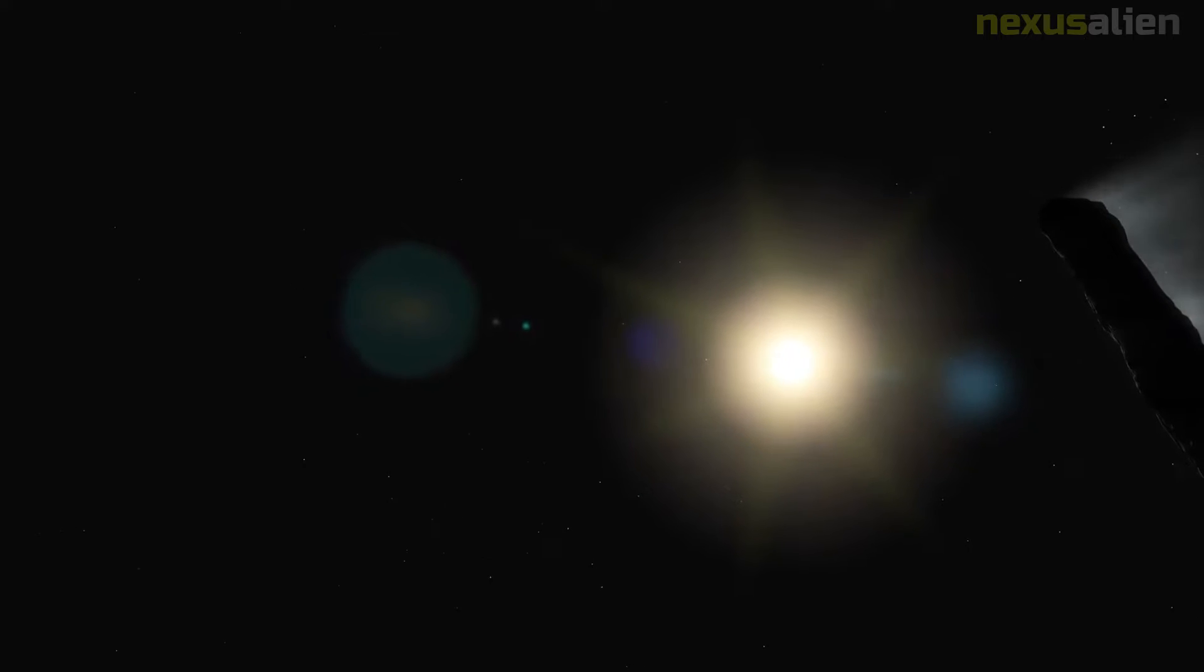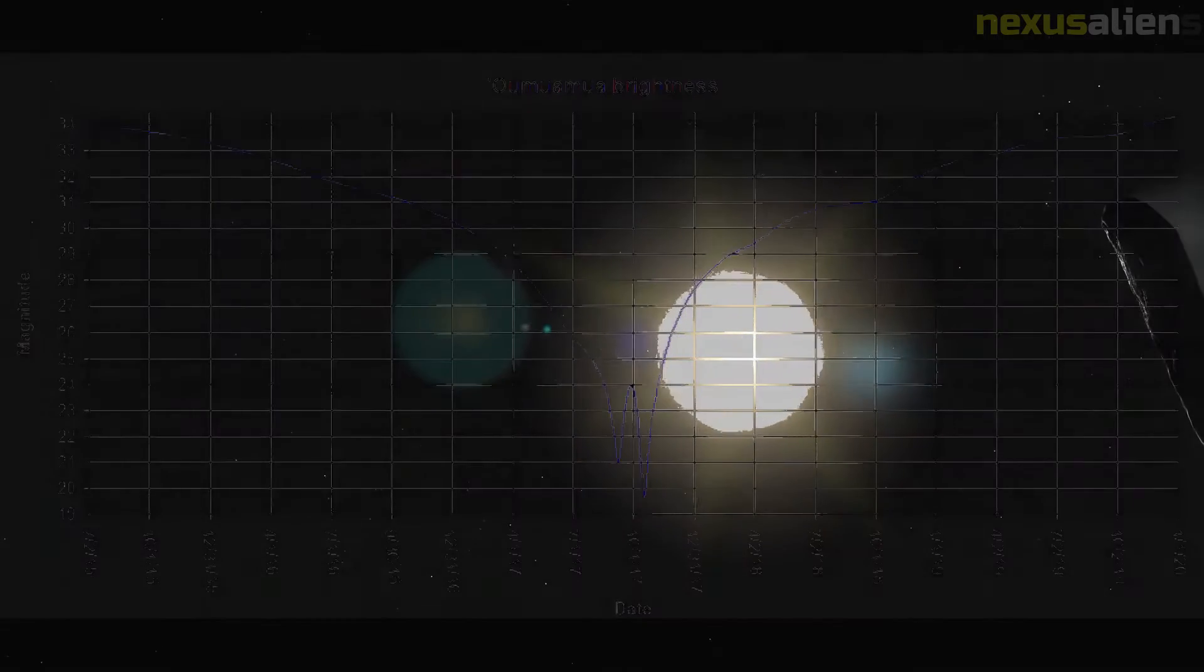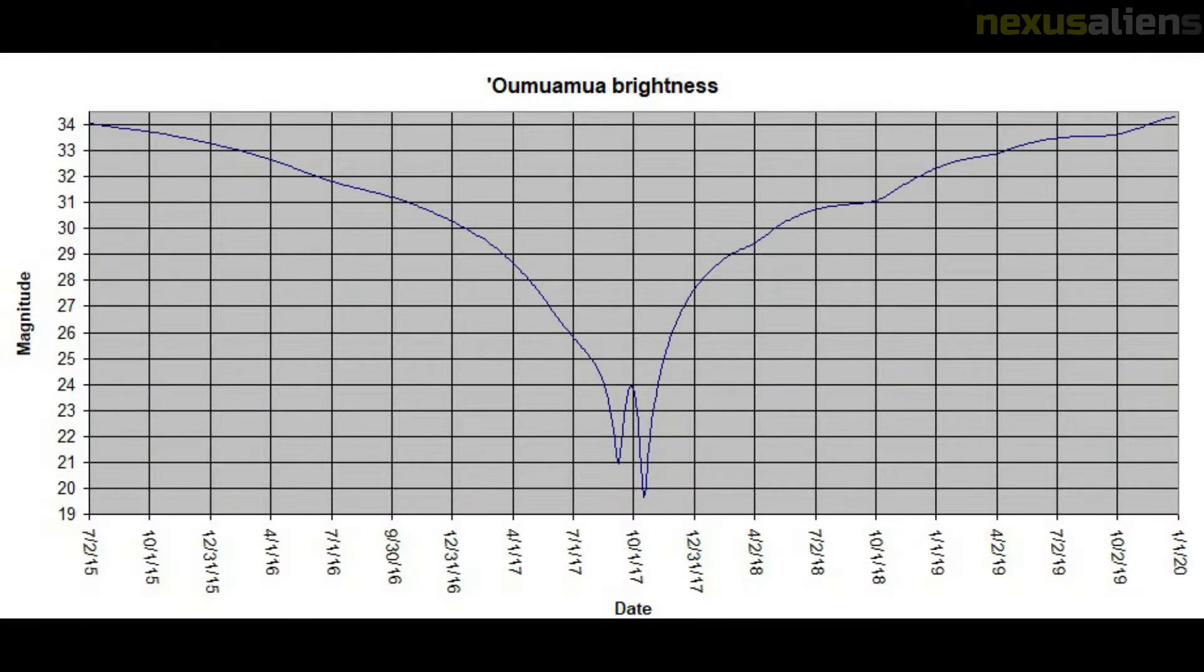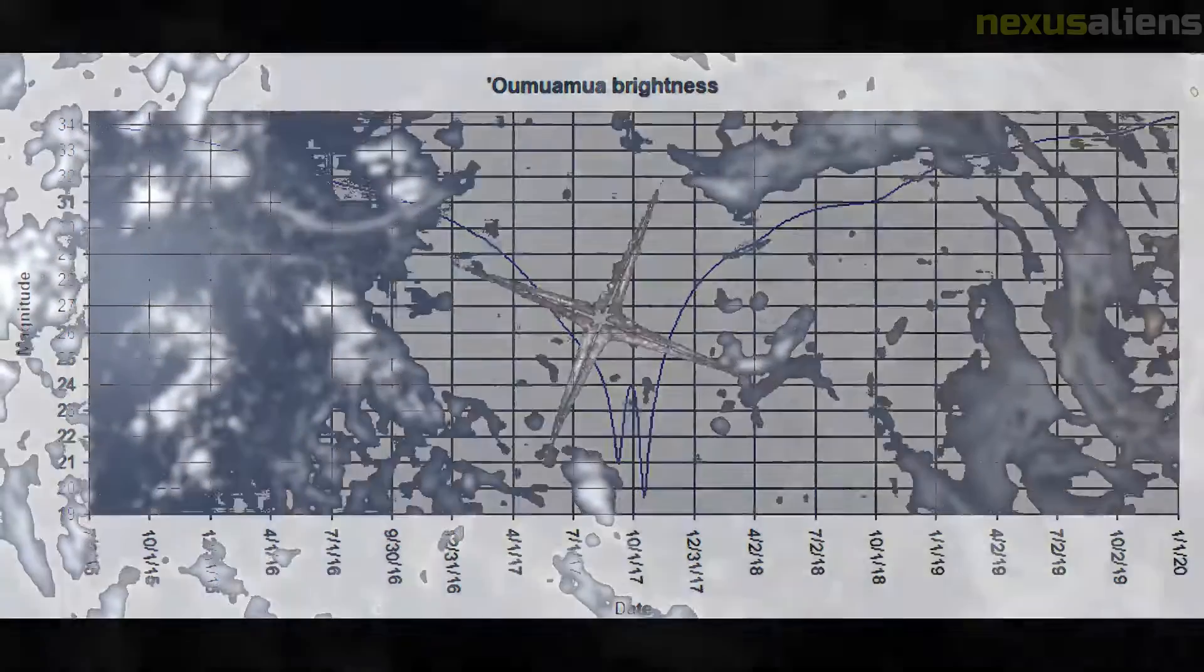On the 16th of October it moved back north of the ecliptic plane and passed beyond the orbit of Mars on the 1st of November. Oumuamua passed beyond Jupiter's orbit in May 2018, beyond Saturn's orbit in January 2019, and will pass beyond Neptune's orbit in 2022.